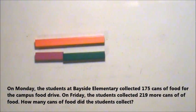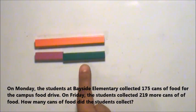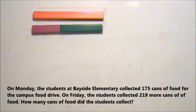My model shows that I found the whole by joining the purple rod and the green rod. Now I will draw my strip diagram.